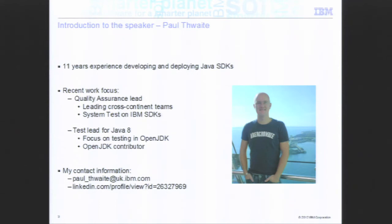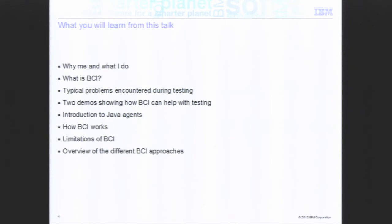So what are you going to get out of this talk? A little bit more about me and why I'm doing the talk. I'll give a brief introduction into bytecode instrumentation, then look at the testing aspects — how can we use BCI to test the product. We'll go to the command line with a few examples of how we actually do BCI, run a test and then run a test with BCI. I'll provide an introduction to Java agents, go through exactly how BCI works, the limitations, and a few approaches.